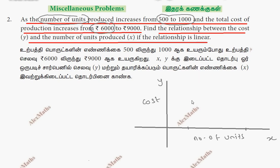So 500 maps to 6000 — that gives us the point (500, 6000). If x is 1000, then 9000 is coming to that — giving us the point (1000, 9000).